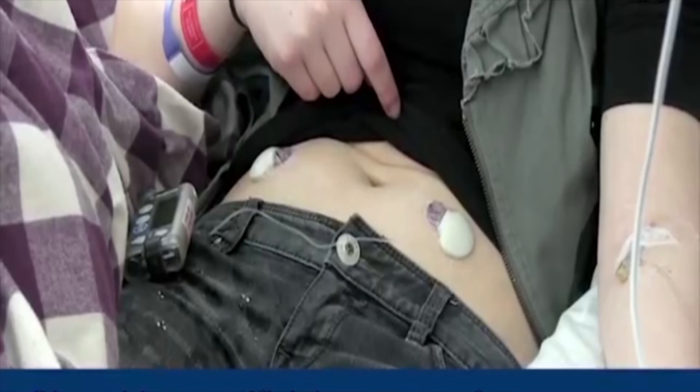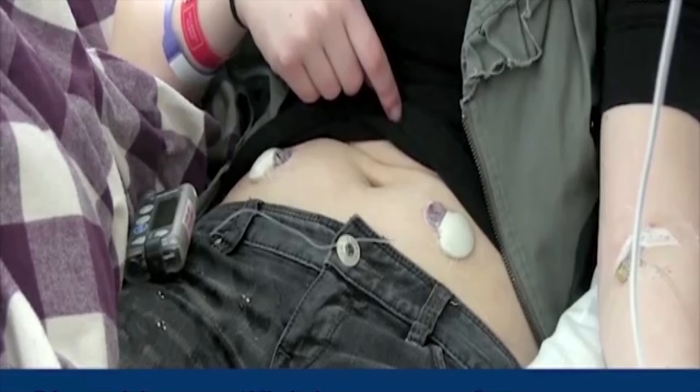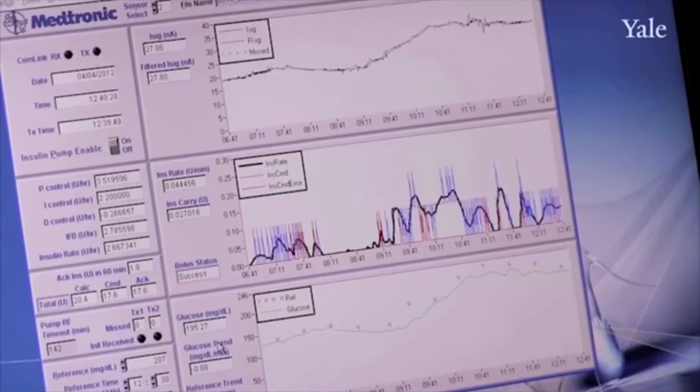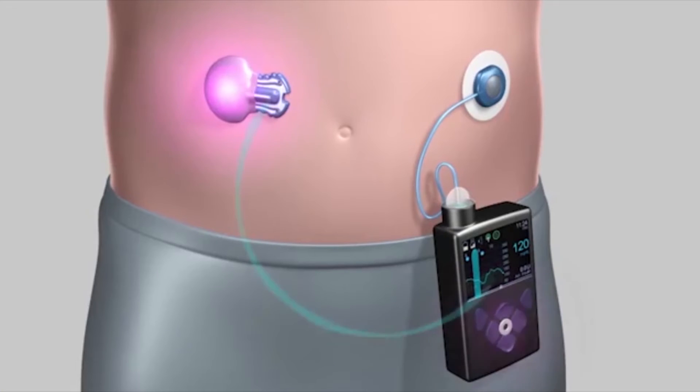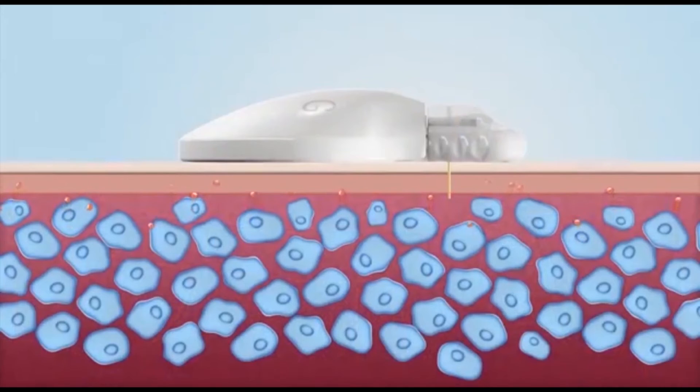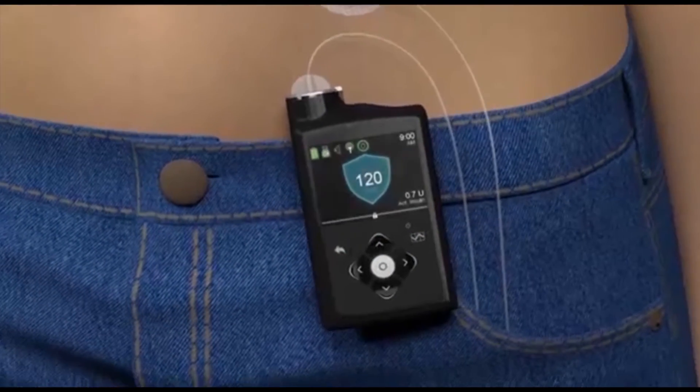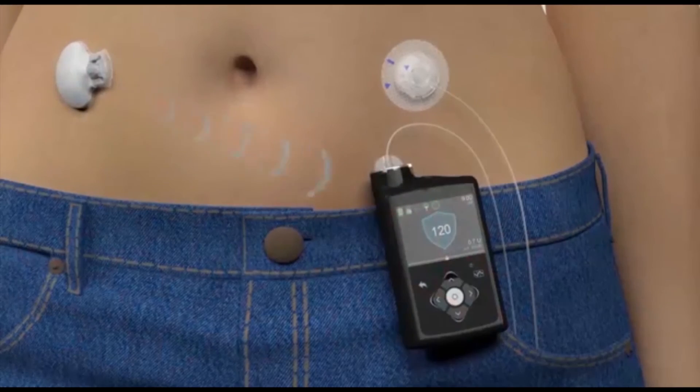Continuous glucose monitor or CGM provides a steady stream of information that reflects the patient's blood glucose levels. A sensor placed under the patient's skin subcutaneously measures the glucose in the fluid around the cells which is associated with the blood glucose levels. A small Bluetooth transmitter sends information to a receiver. A CGM continuously displays and estimates the blood glucose levels, their direction and rate of change of these estimates.